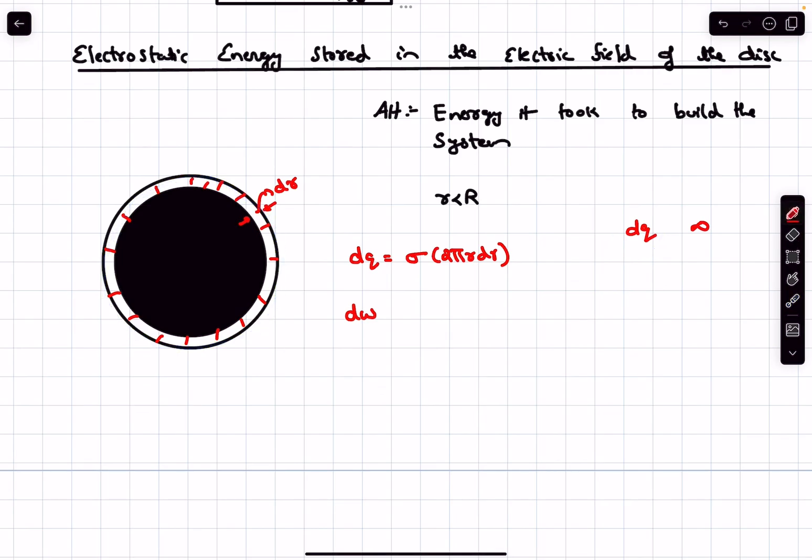Now if I want to write down the work that it took to do that process—that is, to bring dq charge from infinity and place it at the circumference of our disc—the answer to that is the charge dq times the potential difference. This is going to be dq multiplied by the potential at the circumference of a disc we discussed in the last page; it was σr/(πε₀), where r is the radius of our disc at this particular instant.